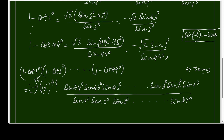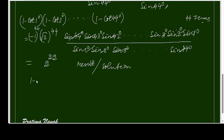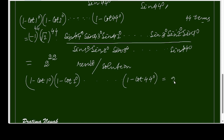We are getting a very interesting result: the numerator is exactly the same as the denominator, so they cancel and become 1. Therefore the product equals (√2)^44 = 2^22. So the final answer is: (1 - cot 1°)(1 - cot 2°)···(1 - cot 44°) = 2^22.